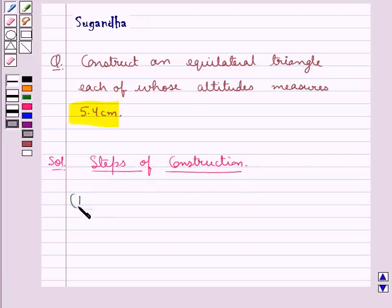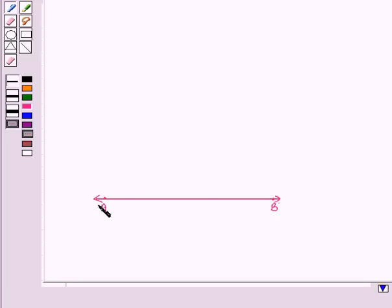First of all we will draw a line say AB. This is the line AB.